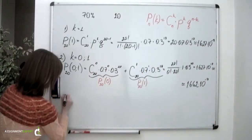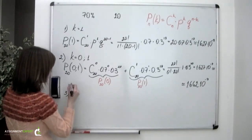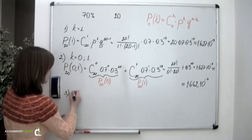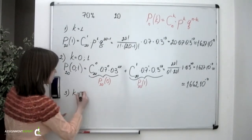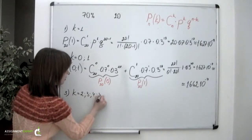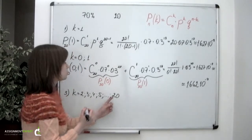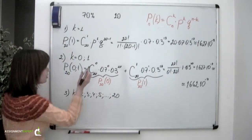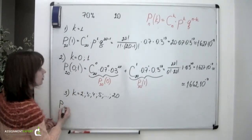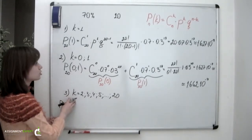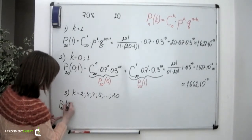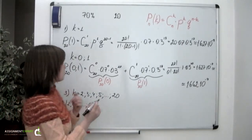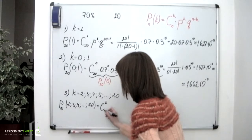The third question asks about the situation where more than one couple out of 20 paid for their honeymoon themselves. This means the number of successes can be 2, 3, 4, 5, and so on up to 20. We could use Bernoulli's formula and calculate the probability of 2 or 3 or 4 up to 20 successes out of 20 trials as a sum of combinations.